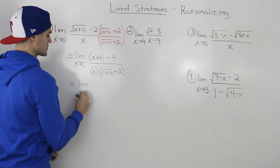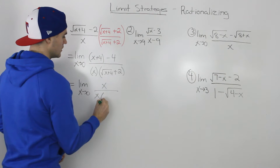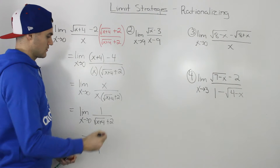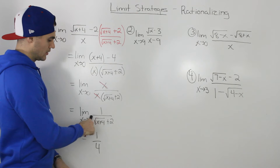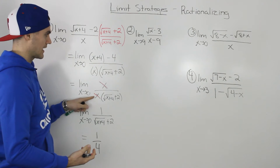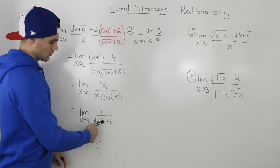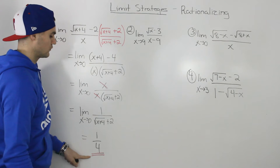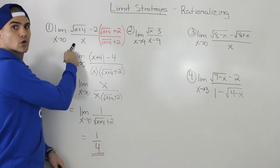The 4s in the numerator cancel out, leaving x over x times the square root of x plus 4 plus 2. The x's then cancel out, leaving us with the limit as x goes to 0 of 1 over the square root of x plus 4 plus 2. Now we can substitute 0 for x: the square root of 4 is 2, and 2 plus 2 is 4. So our final answer is 1 over 4.